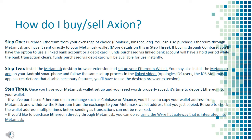Step 2: Install the Metamask desktop browser extension and set up your Ethereum wallet. You may also install the Metamask app on your Android smartphone and follow the same setup process in the linked video. Apologies to iOS users — the iOS Metamask app has restrictions that disable necessary features, so you'll have to use the desktop browser extension.